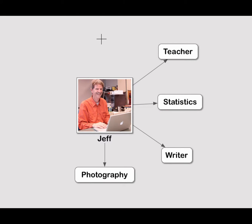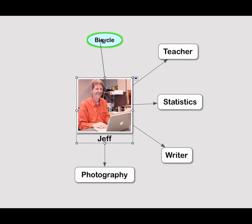Let's try a mind map. We're going to do one that talks about me — a little bit about me as a person and then as a learner. In the middle we're going to put 'me,' a little picture of me. I'm Jeff. I see myself as a teacher. I teach adults at the graduate level at the University of Southern Maine. I teach statistics. I like to write — articles, longer pieces, books, and video. I also enjoy photography, which brings together being visual and capturing images. I like to bicycle, and I could add that right here. As you can see, we're building that radial map.